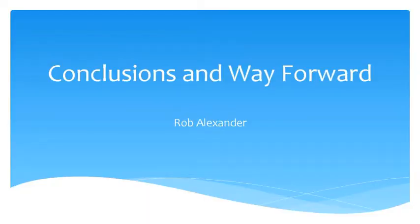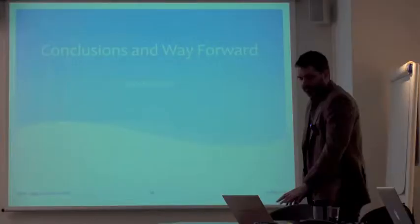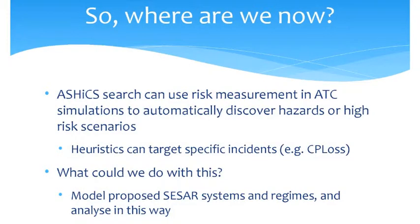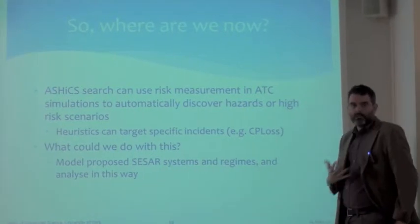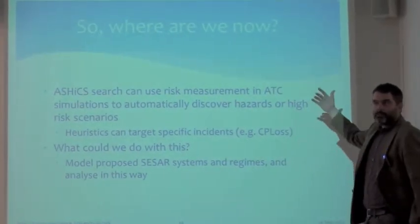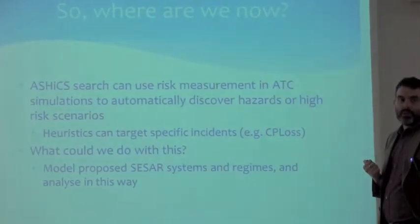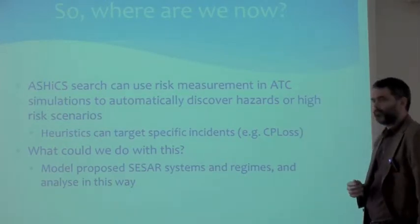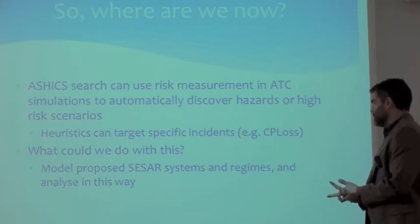To summarize: heuristic search can use risk measurement in air traffic simulations to automatically discover high-risk situations and maximize a compound risk score. By weighting those risk scores to make some factors more important, we can focus on specific incidents. Before presenting results to the human analyst we can unweight those scores to provide the raw risk measures, where the population was biased by favoriting CP loss.